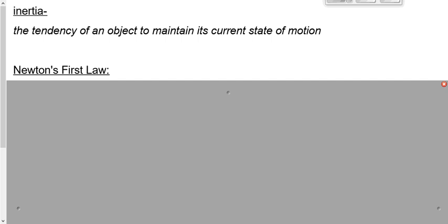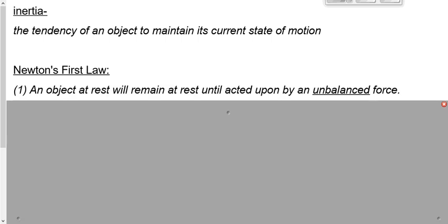Which leads us to Newton's first law. Newton's first law, or the law of keep doing whatever it's doing, says an object at rest will stay at rest until an unbalanced force acts on it. It's not good enough just to say until a force acts on it. We have to say until an unbalanced force acts on it. We can have forces acting on it all we want. If they balance each other out, it's still not going to move.